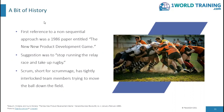Here is a summary of the history of Scrum. The first reference to a non-sequential approach was a 1986 paper entitled The New New Product Development Game. The suggestion was to stop running the relay race and take up rugby. Scrum, short for scrummage, has tightly interlocked team members trying to move the ball down a field. The reference is from Hirotaka Takeuchi and Ikujiro Nonaka, The New New Product Development Game.